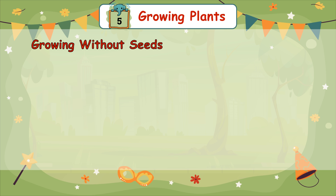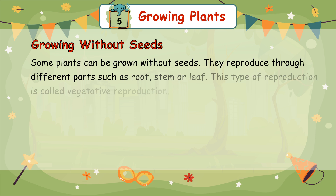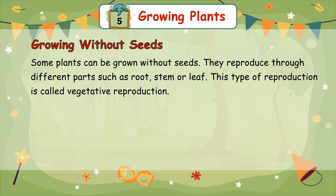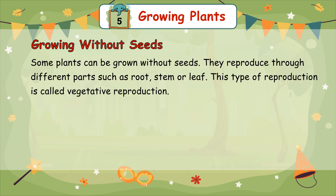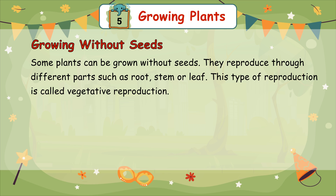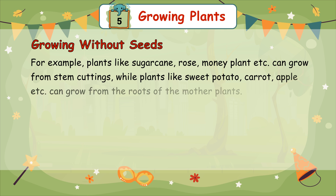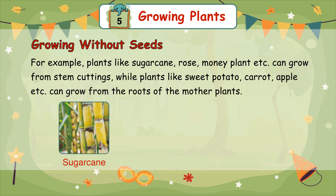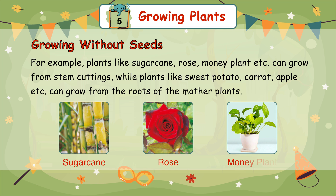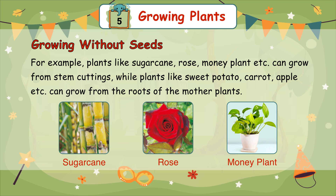Growing without seeds: some plants can be grown without seeds. They reproduce through different parts such as root, stem, or leaf. This type of reproduction is called vegetative reproduction. For example, plants like sugarcane, rose, money plant, etc. can grow from stem cuttings.